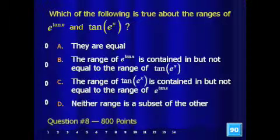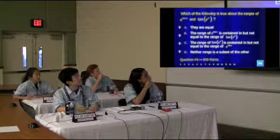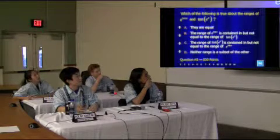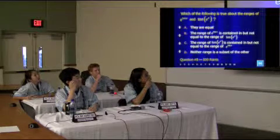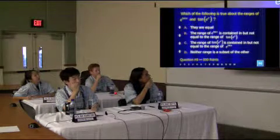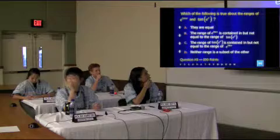Which of the following is true about the ranges of e to the tangent of x and tangent of e to the x? Range means the set of all y-values. A, they're equal. B, the range of e to the tangent of x is contained in but not equal to the range of tangent of e to the x. C, the range of tangent of e to the x is contained in but not equal to the range of e to the tangent of x. Or D, neither range is a subset of the other. Everyone understand the question? Any questions about the question? We're at 800 points and have 90 seconds.